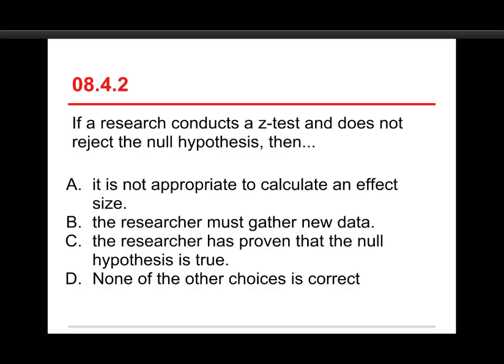Alright, second question. If a researcher conducts a z-test and does not reject the null hypothesis, then: A, it is not appropriate to calculate an effect size; B, the researcher must gather new data; C, the researcher has proven that the null hypothesis is true; or D, none of the other choices is correct. Well, none of the other choices is correct, and let me talk about these just for a second.